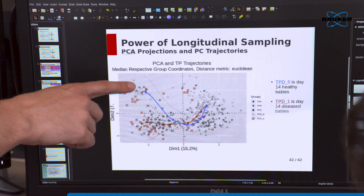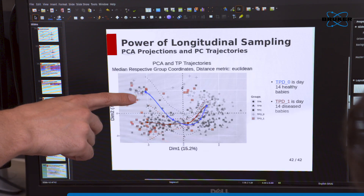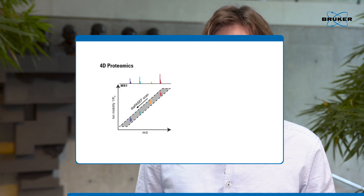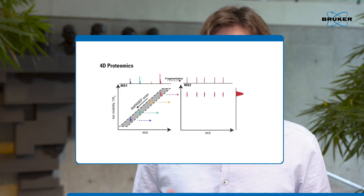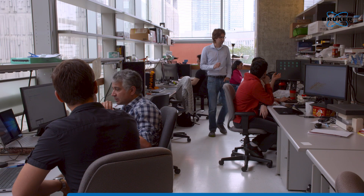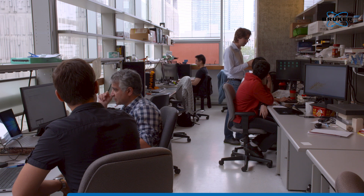One of the big advantages of data-independent acquisition is that it's reproducible and deterministic in its acquisition strategy. But one of the downsides is that it produces a lot of data. The TIMSTOF Pro and the ion mobility separation make this challenge much easier, because it allows us to separate precursors within the same DIA window and assign fragment ions to precursors with much higher certainty.